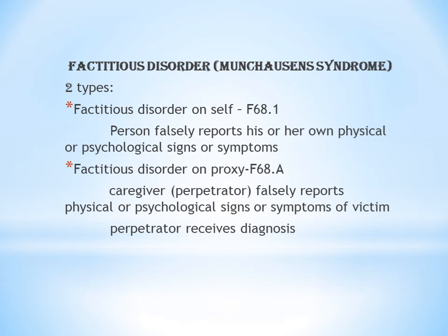The last topic in this chapter is factitious disorder, also known as Munchausen's syndrome. There are two types: factitious disorder on self and factitious disorder on proxy. Factitious disorder on self is when a person falsely reports their own physical or psychological signs or symptoms.